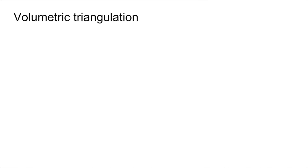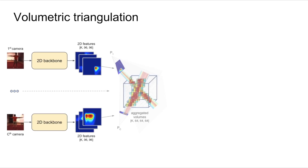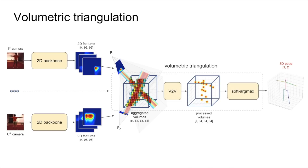In the second method, the intermediate 2D feature maps from the backbone are unprojected to a volumetric cube. Each pixel of the 2D feature map fills voxels along the corresponding camera ray. Next, the volumetric cubes from all cameras are aggregated to a fixed-size cube. The cube is processed with a 3D convolutional neural network that allows modeling a human pose prior.